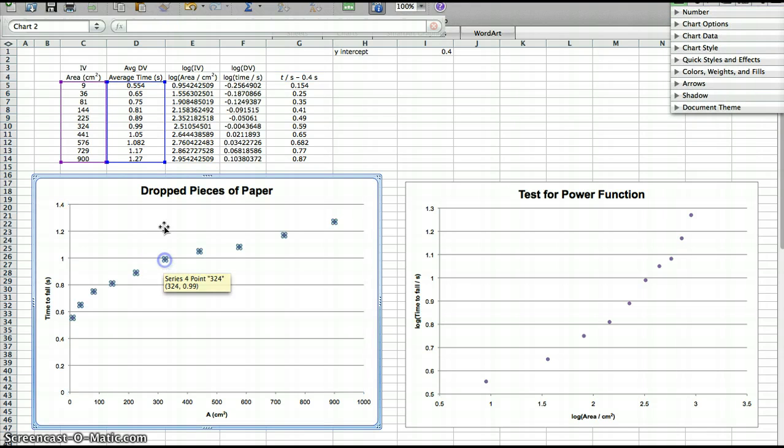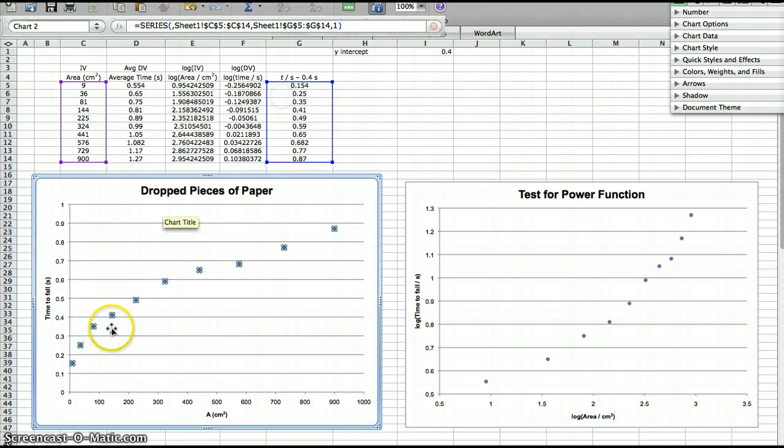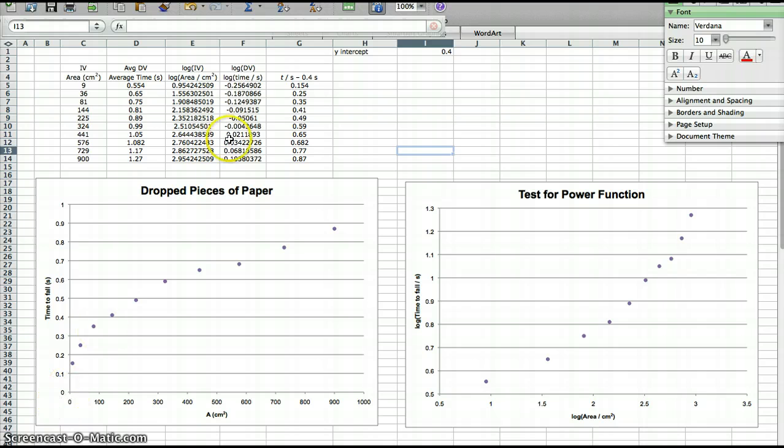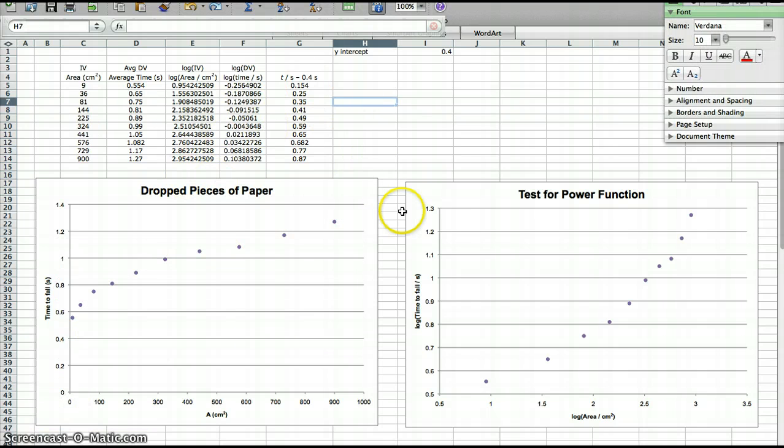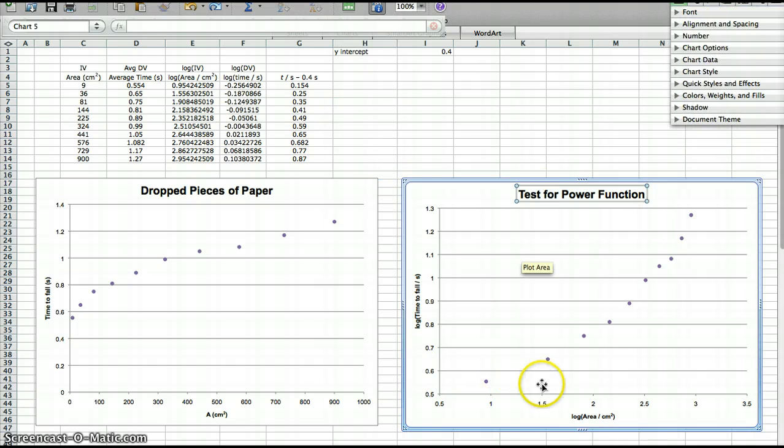So look, if we were to move our y-values from here, average time, to average time minus 0.4, then now the graph doesn't have a y-intercept. Comes in, and bam, it falls all the way down to 0, 0. But we don't need to make that graph. That's not necessary. I just wanted to show you so you can see exactly what it is we're doing.